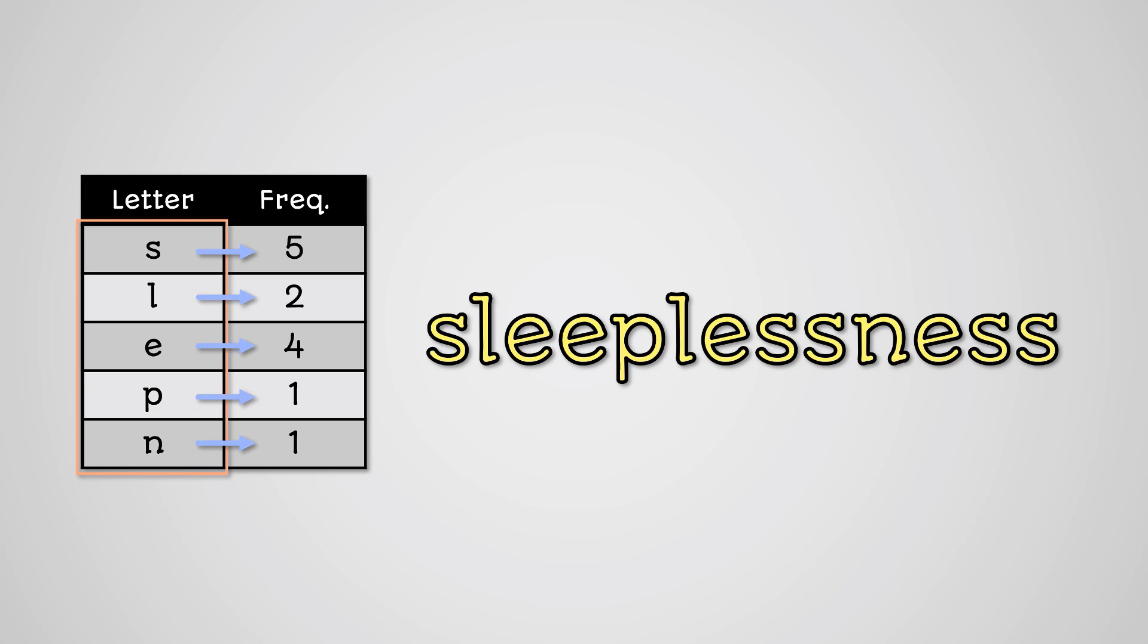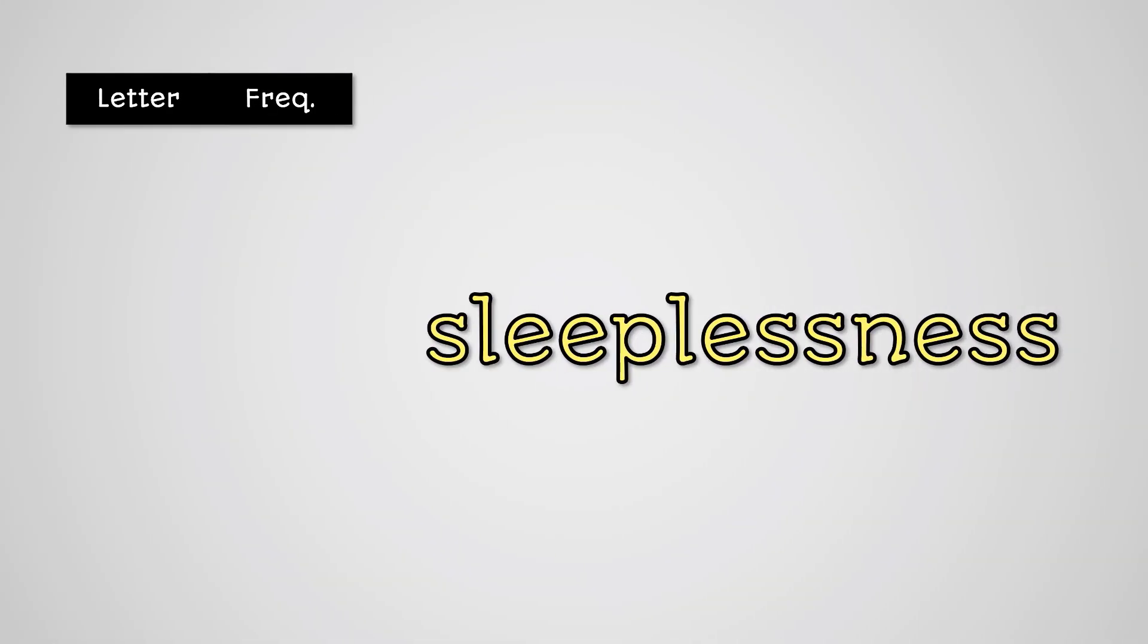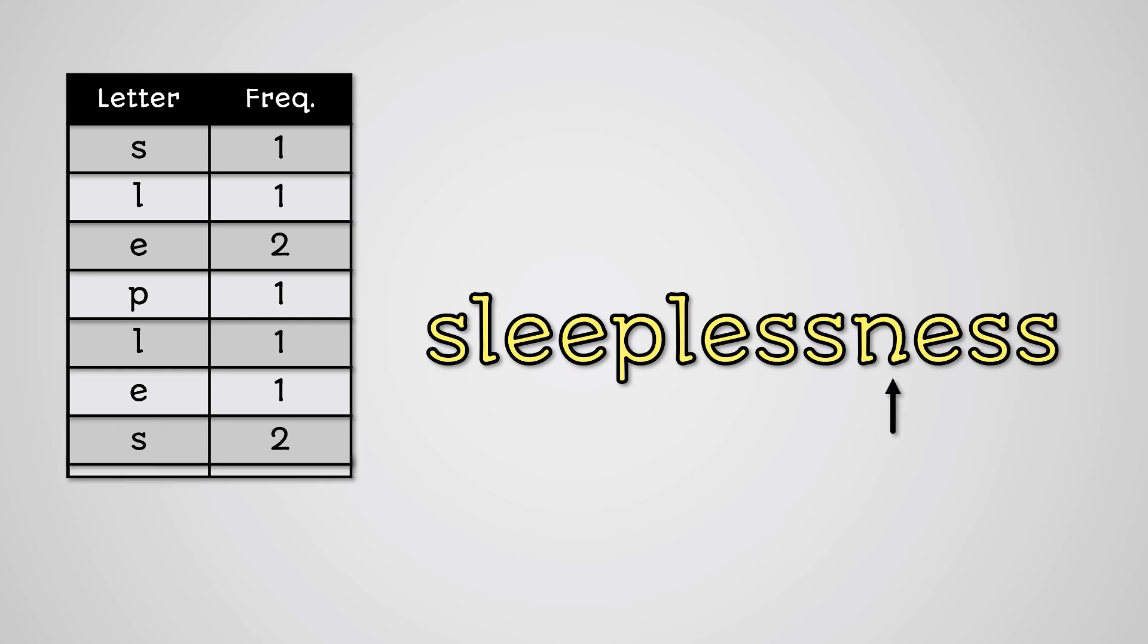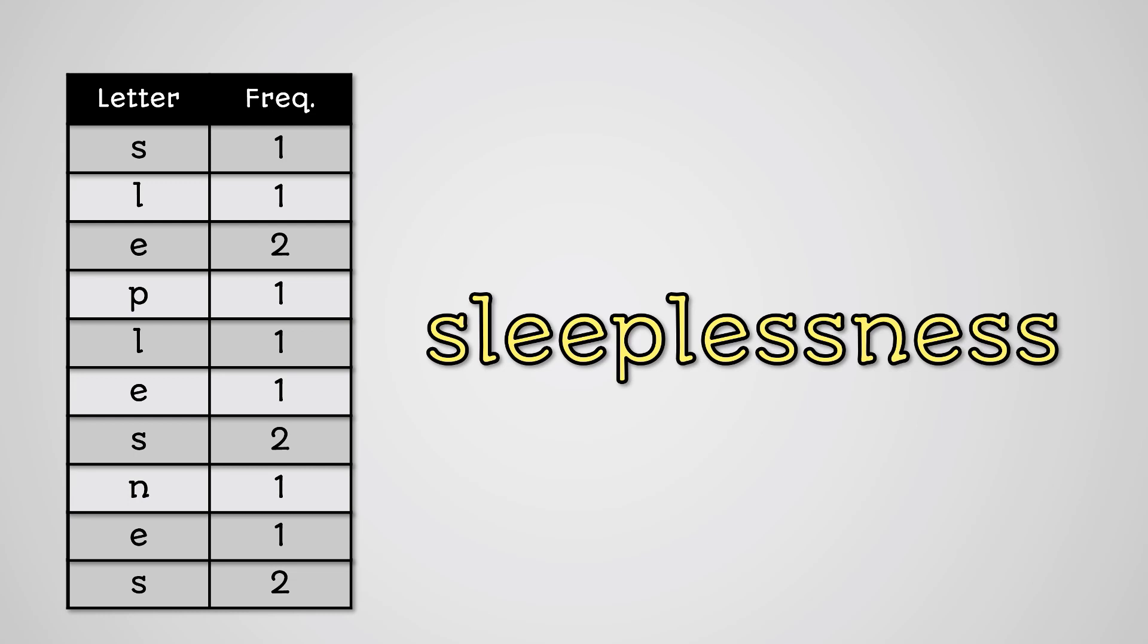This is where the critical distinction is between run length encoding and Huffman encoding. With RLE, when you come to an end of a run of letters, you add a new row in the frequency table. So the frequency table for run length encoding would be this. As you can see, the frequency value is the number of times the letter appears consecutively.